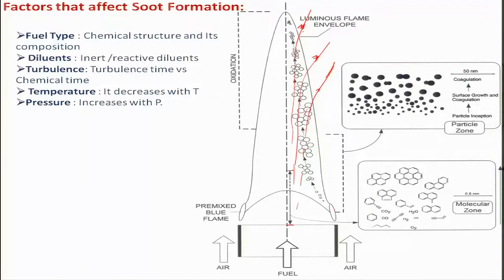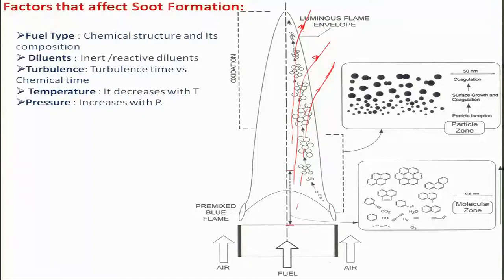Soot particle size and distribution also depend on the turbulence level; one must look at whether the turbulence timescale or the chemical timescale is dominant. It has also been found that when the inlet temperature of the fuel or oxidizer is increased, soot generation decreases. When pressure is increased, soot formation increases. These findings are particularly from jet diffusion flame studies.